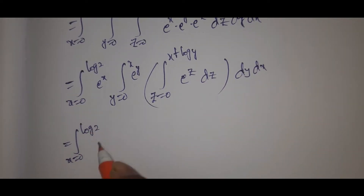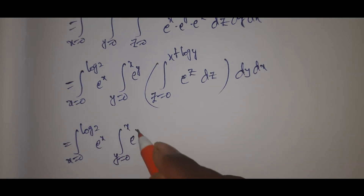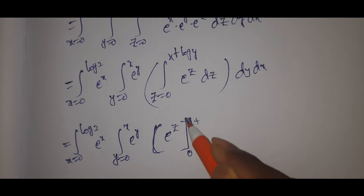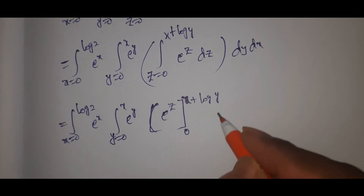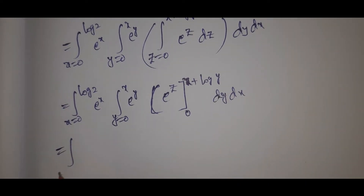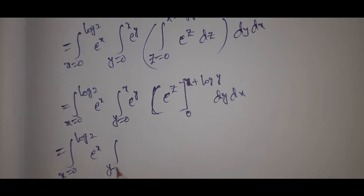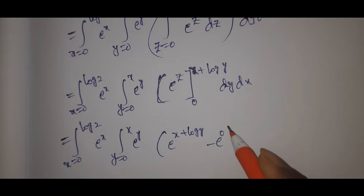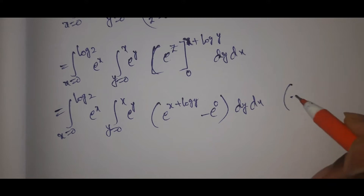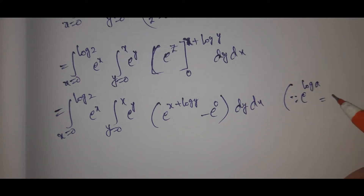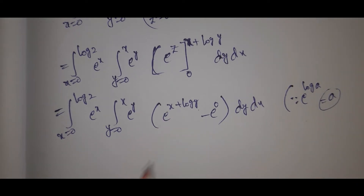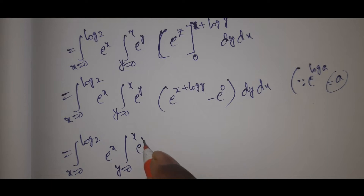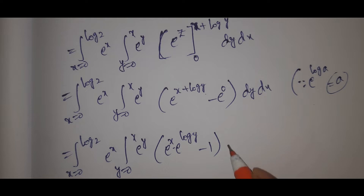That equals the integral from 0 to log 2 of e to the power x, times y from 0 to x of e to the power y, times the integral of e to the power z evaluated from 0 to x plus log y, which gives e to the power (x plus log y) minus e to the power 0, into dy dx.